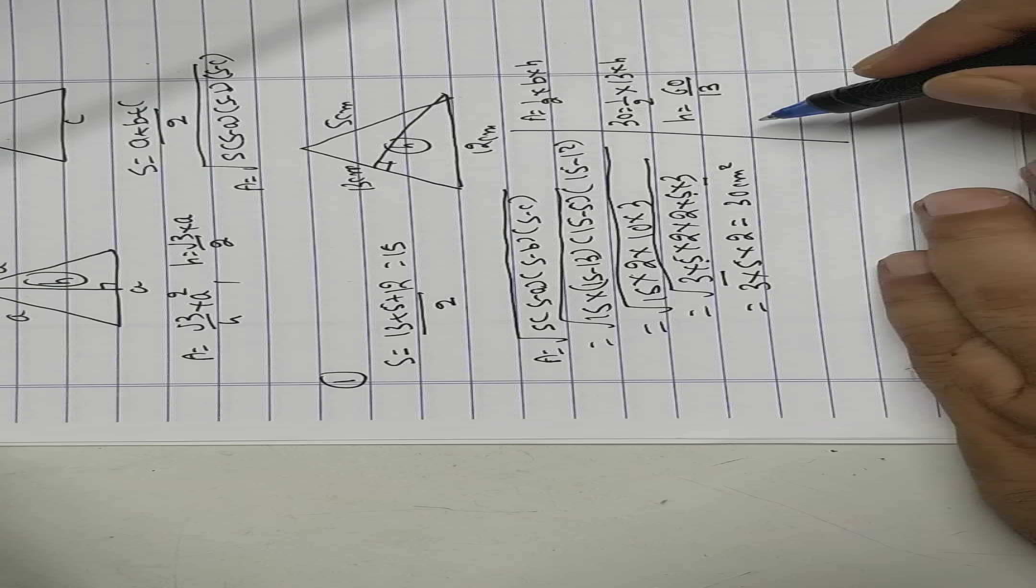Same triangle, I want to find the height to the longest side. This I want to find the height. Area equal to half into base into height. Area I know 30, half, base is 13, height I don't know. So height equal to 60 upon 13, 4.8 upon 13 centimeter.